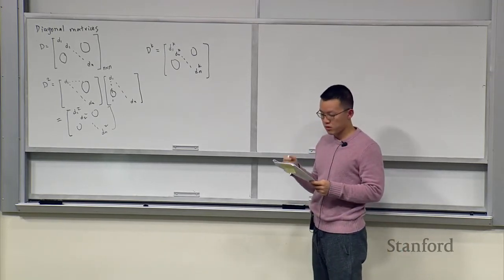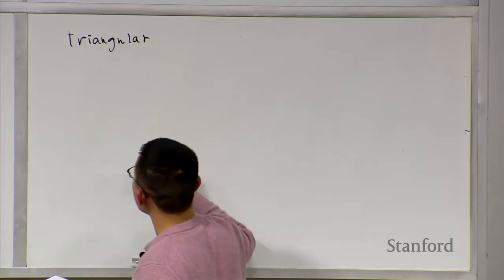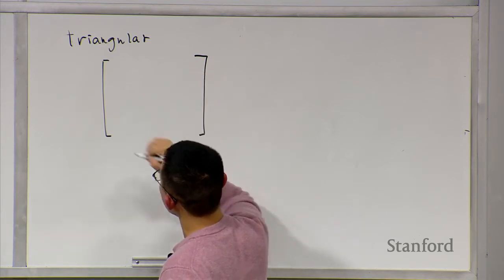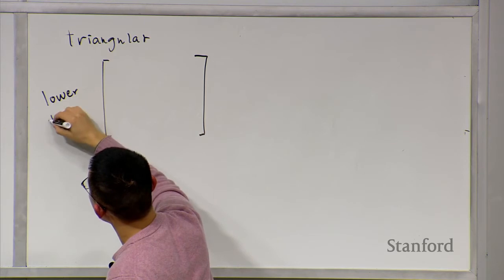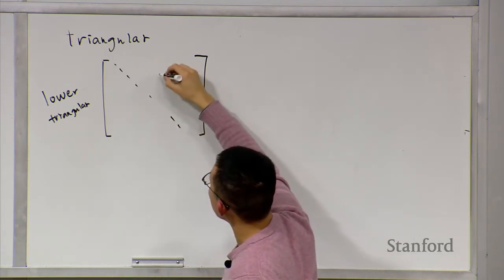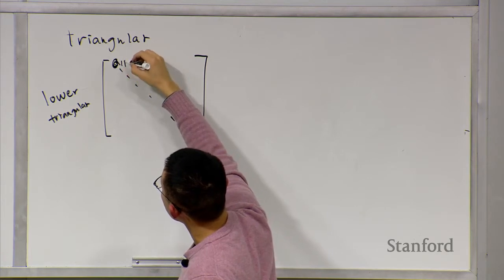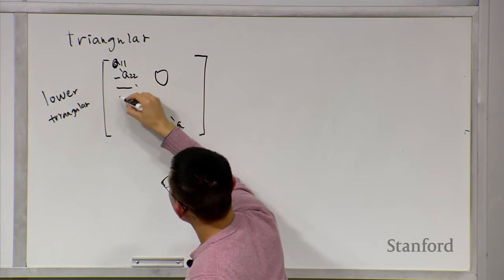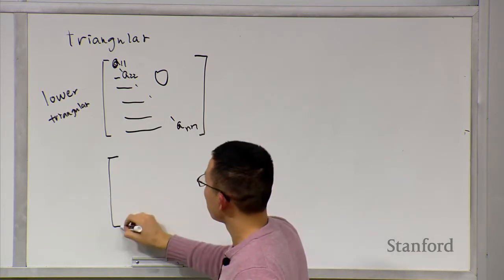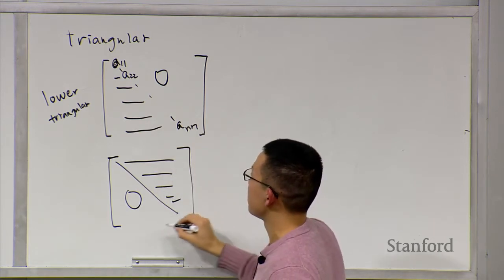Second, triangular matrices have half their entries equal to zero. For a lower triangular matrix, all entries above the diagonal are zero, while the diagonal and lower entries may be non-zero. For an upper triangular matrix, all entries below the diagonal are zero, with non-zero entries starting from the diagonal upward.